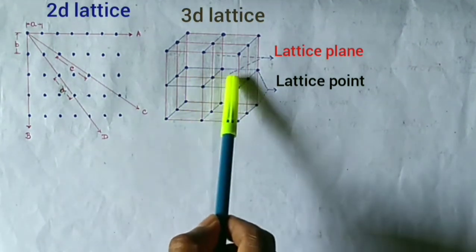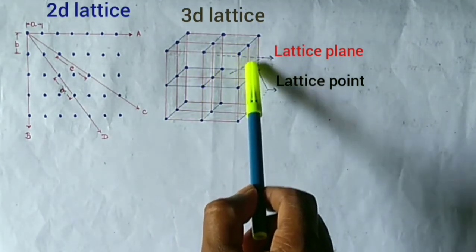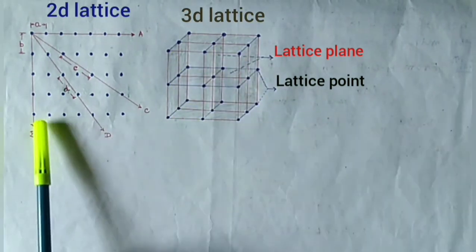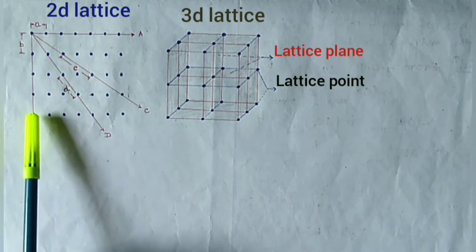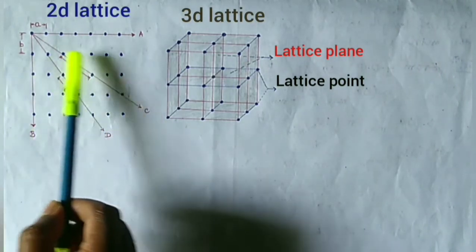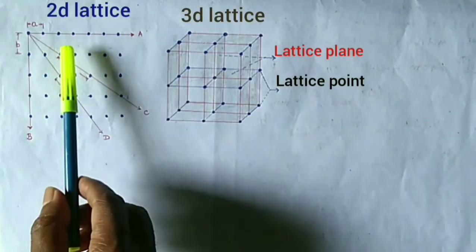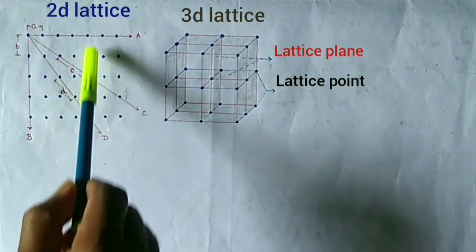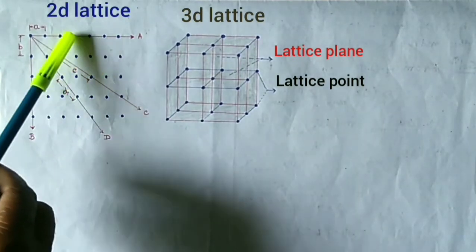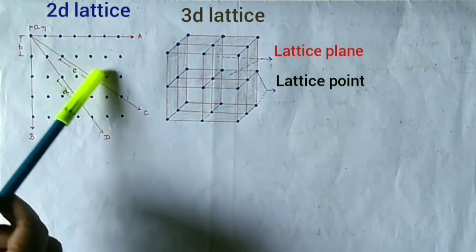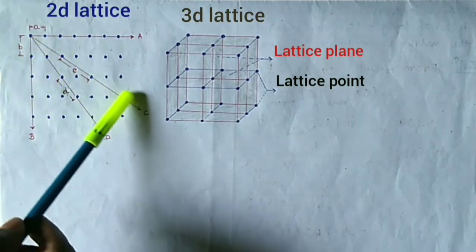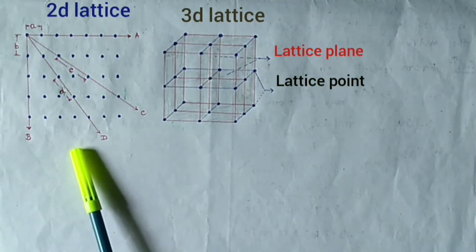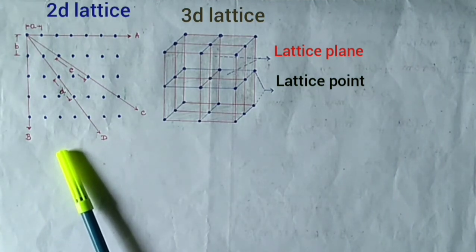In the three-dimensional lattice, you can see that these planes are parallel to each other, and similarly these other sets of planes are also parallel. Likewise, these lines are parallel, and these lines are also parallel, and these lines as well. As per the definition, all the lattice points are arranged along parallel lines.